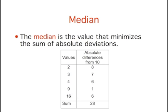The median is the value that minimizes the sum of absolute deviations. Here, the absolute differences from the arbitrarily chosen number 10 are shown. The total is 28.